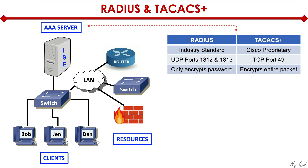When it comes to AAA, there are two protocols that are the most popular in the industry. One is called RADIUS, and the other is called TACACS+. RADIUS is industry standard. It uses UDP ports 1812 and 1813, and it only encrypts passwords. So it's a little bit less secure, but it's an open standard that's been around a long time and is widely supported.